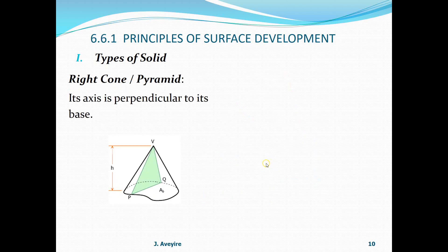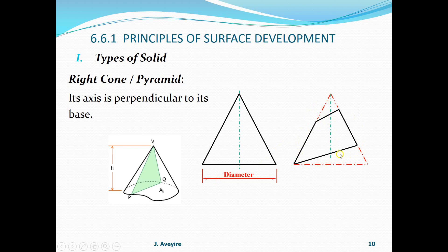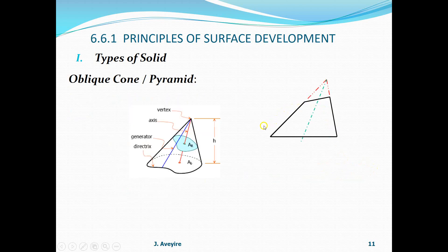Right cone or pyramid - its axis is perpendicular to its base. Here we have the height and the path along which it goes, and that is the base - perpendicular to it. Here we have our cone with its axis perpendicular, and the diameter is the base defined. We also look at a truncated cone which has been cut, with the cut-out portion shown in red. The diameter taken from the base confirms this is a right cone.